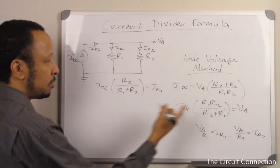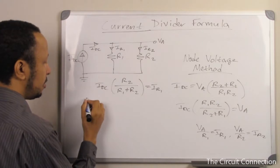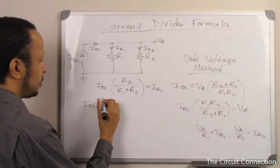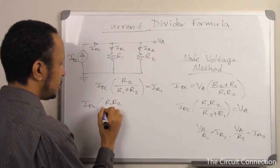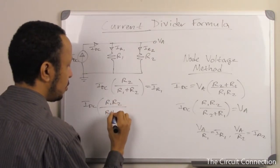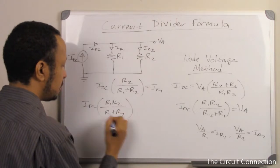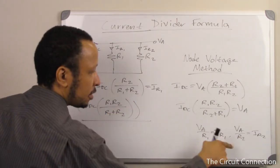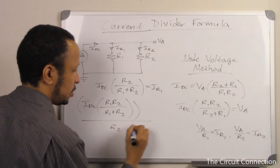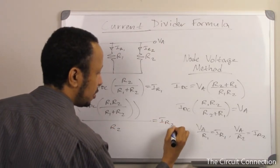Again, we'll use this expression here and we'll say IDC times R1 R2 over R1 plus R2. All of that over R2 will give us IR2.